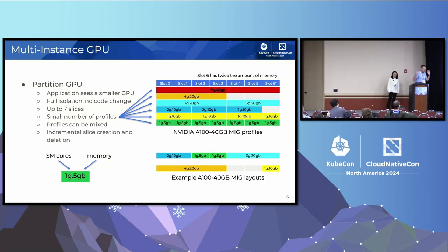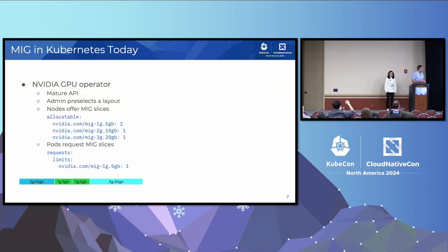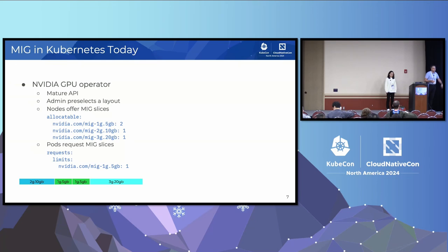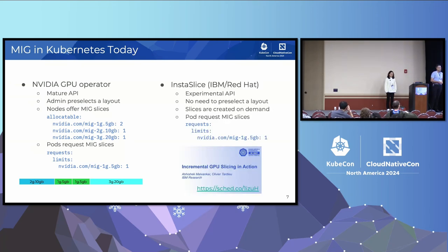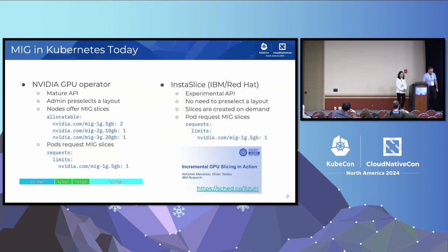In Kubernetes, you can use the NVIDIA GPU operator, choose a layout, and it will create that layout on all GPUs on your node; then pods can request those slices and run with the fraction of the GPU you want. The drawback is you have to know the layout in advance and it must be homogeneous at the node level. So with colleagues at Red Hat, we've been developing an alternative experimental project where you request the same slices without having to pre-partition the GPU ahead of time. Now I'll switch to Yue for the modeling part.